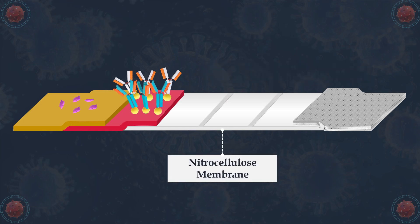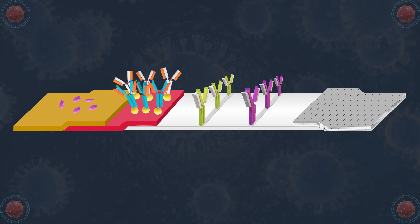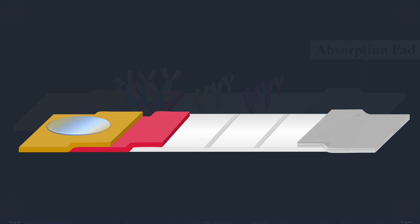The test strip also contains a nitrocellulose membrane with two lines: the first line coated with monoclonal anti-SARS-CoV-2 antibodies, and the second line coated with mouse monoclonal anti-chicken IgY antibodies. In addition, an absorption pad is used in the test device to move the sample across the test strip.